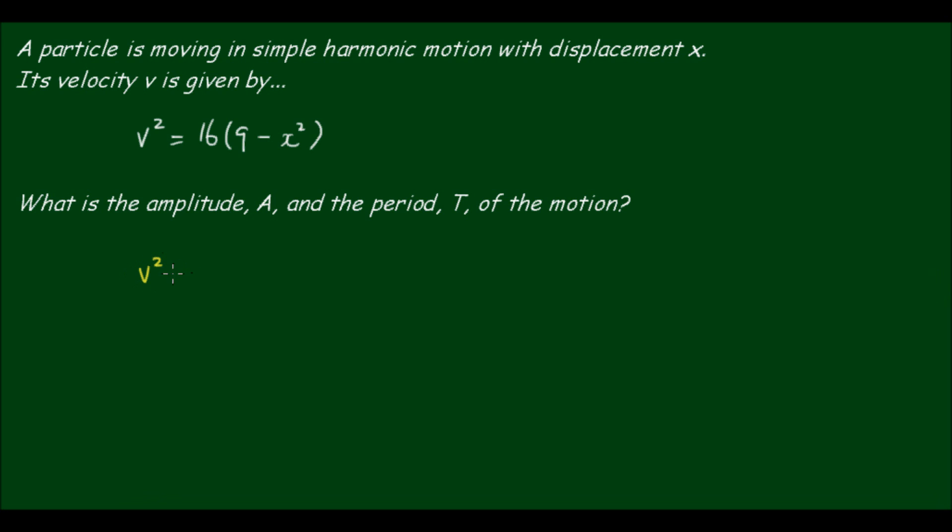Okay, so we derived that V squared is equal to omega squared outside of A squared minus x squared. And I'll call this form of the equation the angular velocity amplitude squared form. I'm not sure if there is actually a technical term for it, but that's what I'll call it. And of course that correlates to our given equation 16 outside of 9 minus x squared.